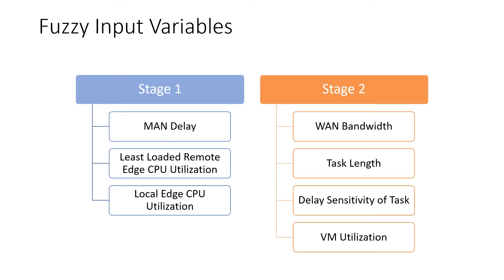After this brief introduction to fuzzy logic, let me share our fuzzy input variables. For the first stage, we have three input variables: metropolitan area network delay, least-loaded remote edge CPU utilization, and local edge CPU utilization. For the second stage, we have four input variables: wide area network bandwidth, task length, delay sensitivity of the task, and virtual machine utilization.